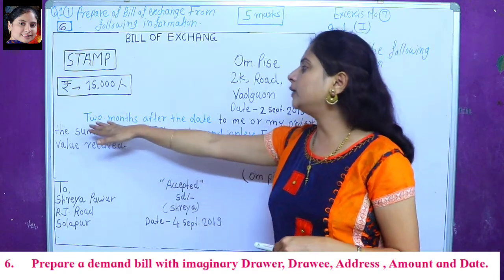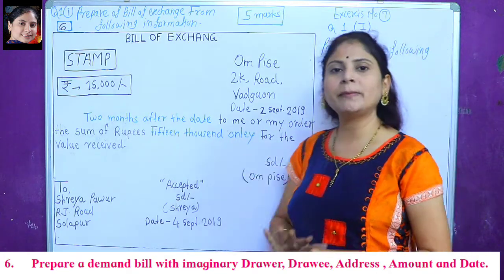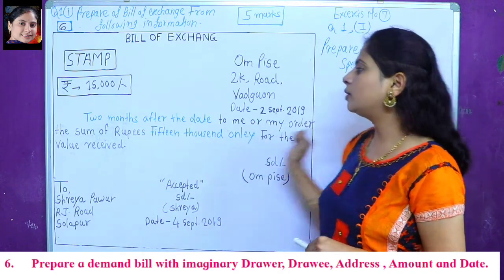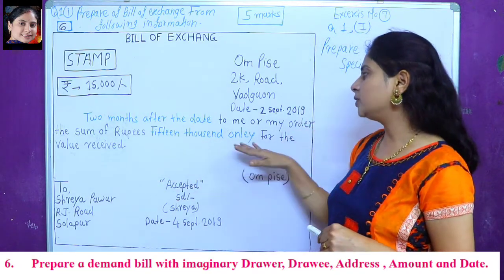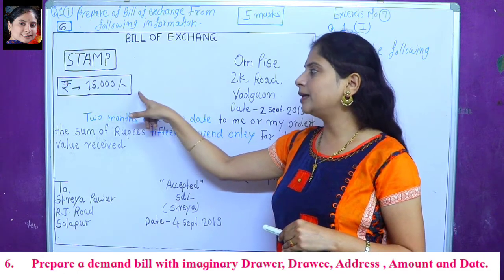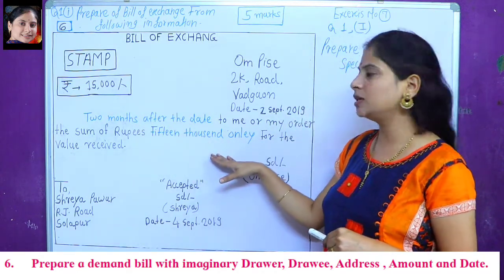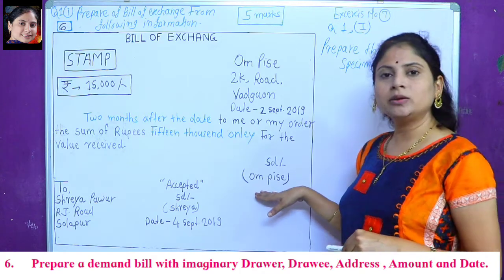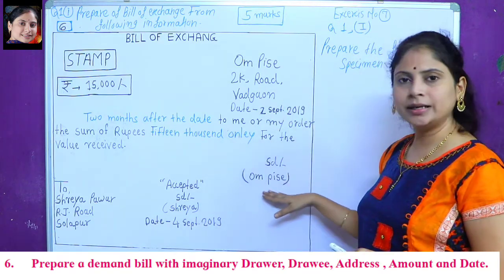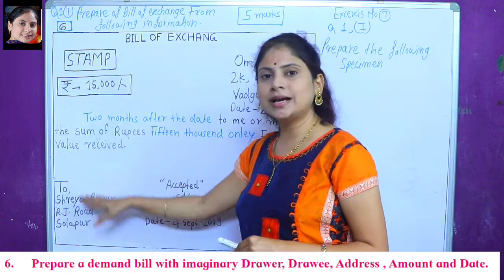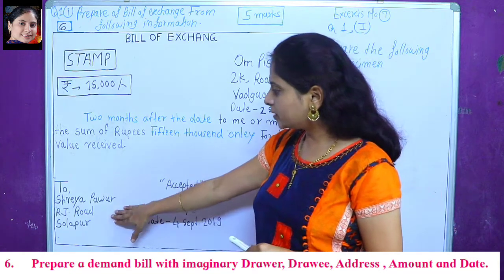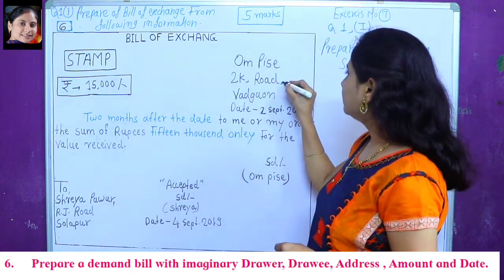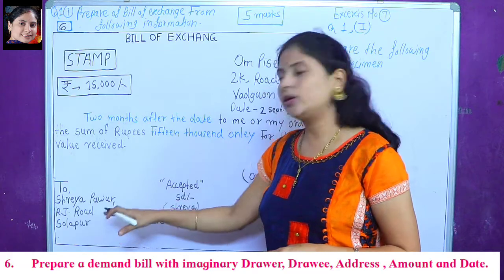Pay to me or my order the sum of rupees 15,000 only, for the value received. Name: Shreya, RJ Road, Solapur.